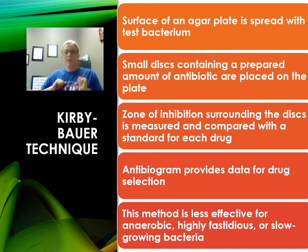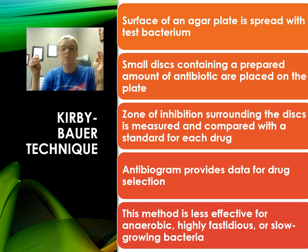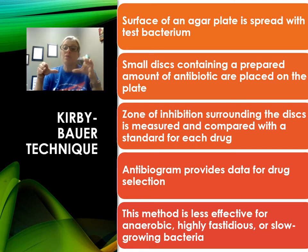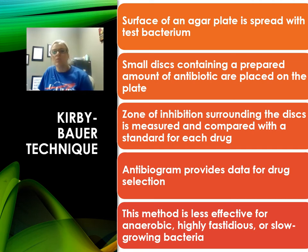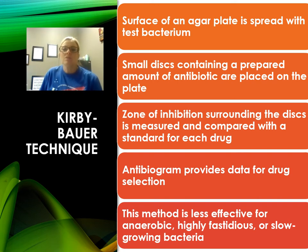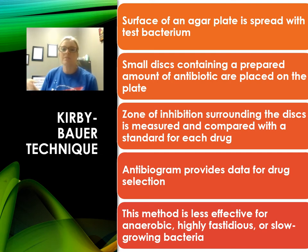If the bacterium is susceptible to an antibiotic, you will see a clear area around the disc called the zone of inhibition, where bacteria do not grow. You measure that zone — the larger the area, the better the antibiotic will work. You can test seven, eight, or even nine different antibiotics at the same time. The zone of inhibition reflects a lack of bacterial growth around each disc, and this method is very effective for anaerobic or very slow-growing bacteria.